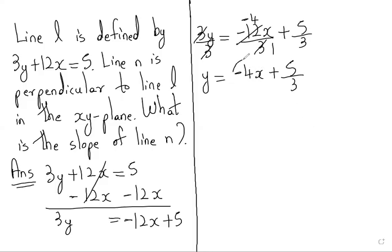So here before x we have minus 4. This is the slope for line l. But they have not asked the slope of line l. They have asked the slope of line n.